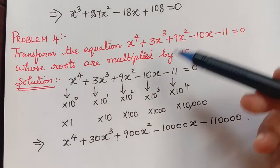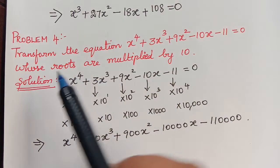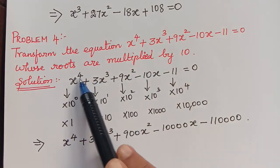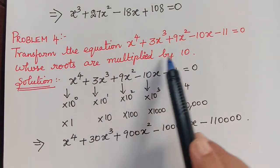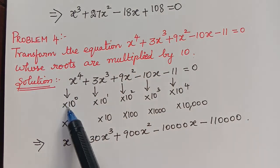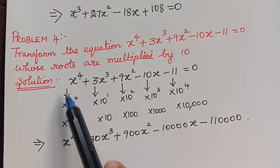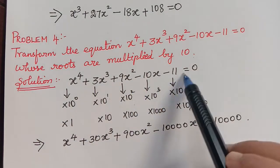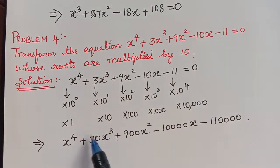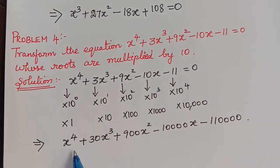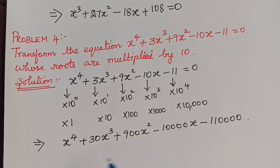After this we have another problem in which the roots are multiplied by 10. We multiply the coefficients by 10 power 0, 10 power 1, 10 squared, 10 cube, 10 power 4. After multiplication, the transformed equation is obtained as shown.